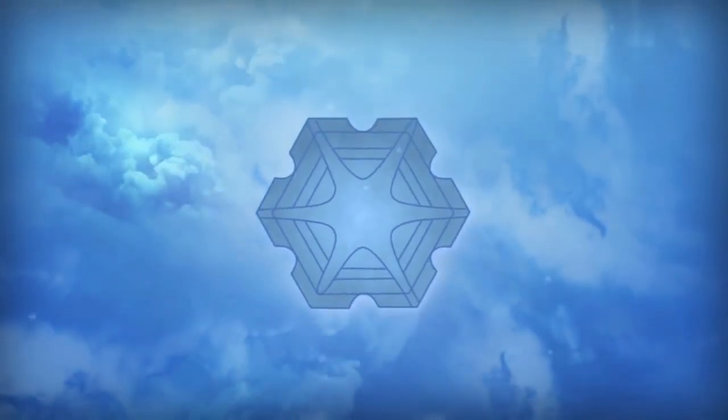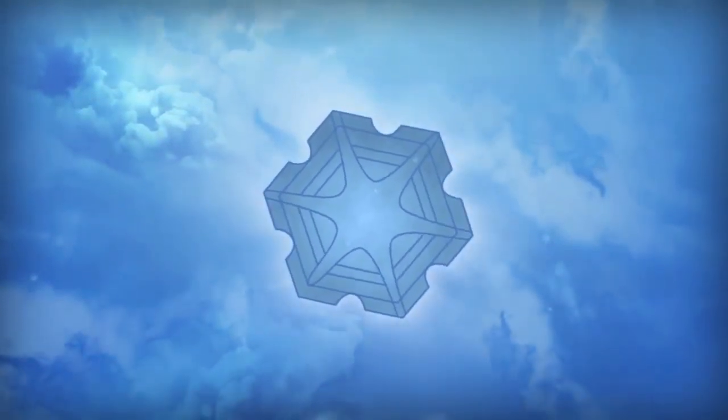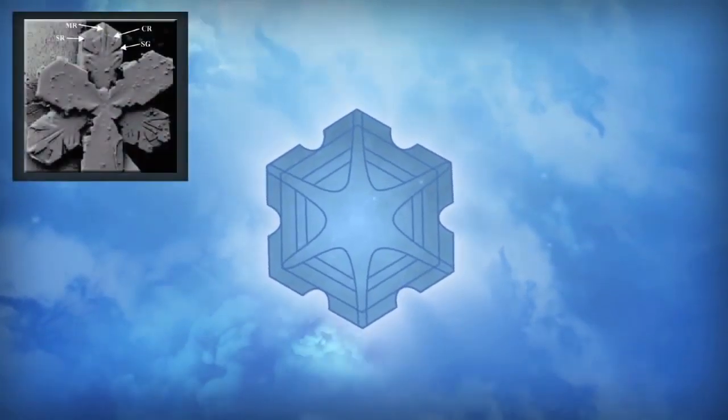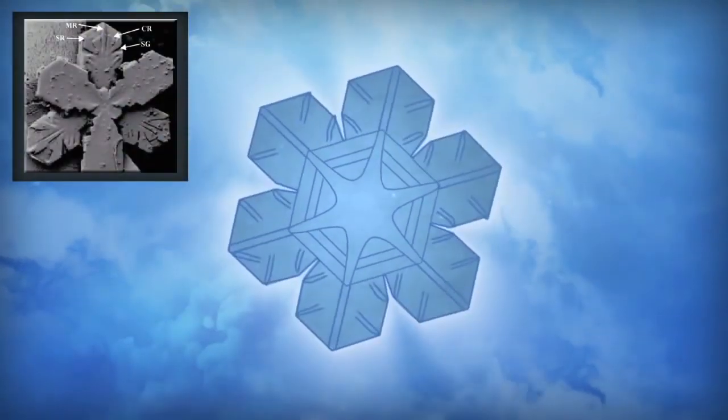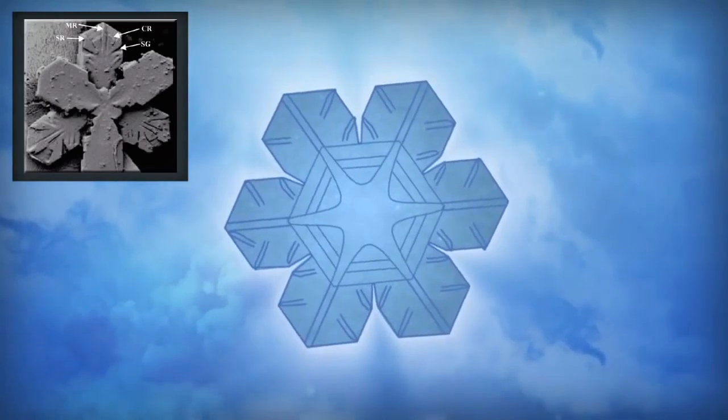The lines in each branch are due to ridges and grooves on the surface. These six branches form the corners of a hexagon which forms into this shape because the water molecules chemically bond into a hexagonal network.